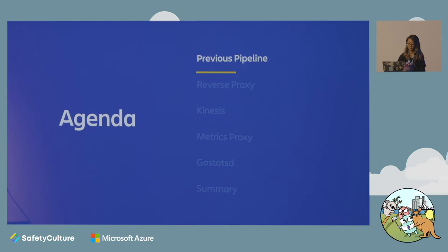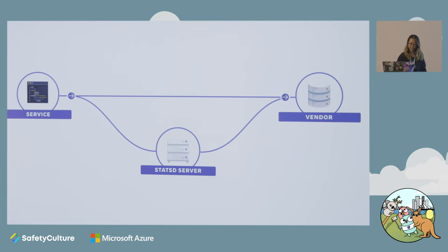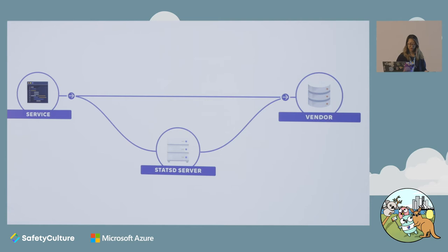First, let's go over what our previous pipeline looked like to get some context. So this is our previous pipeline with the previous vendor. There are two ways that services can send their metrics into our vendor. The first is where a service sends straight into a vendor — here, we have no idea what data is being sent, how big it is, or whether it's in the right shape. The second way is via a StatsD server, which is responsible for collection, processing, and aggregation of metrics, and then sends it downstream to our vendor. Our data flows are currently uncontrolled, and we don't really know what we can't see, especially with services that send straight to the vendor — so we have a lack of visibility into our data.